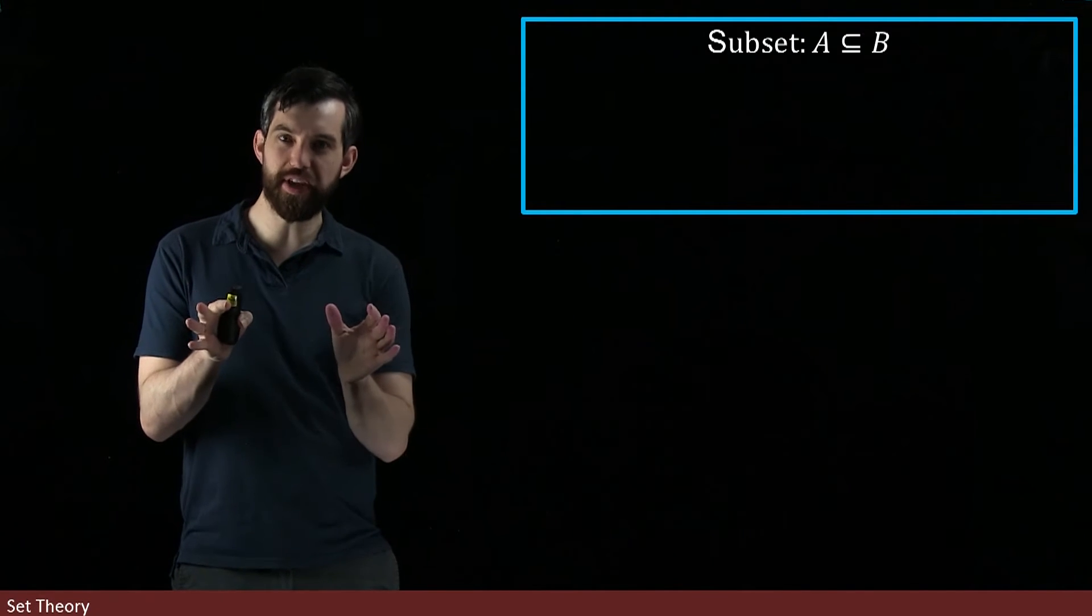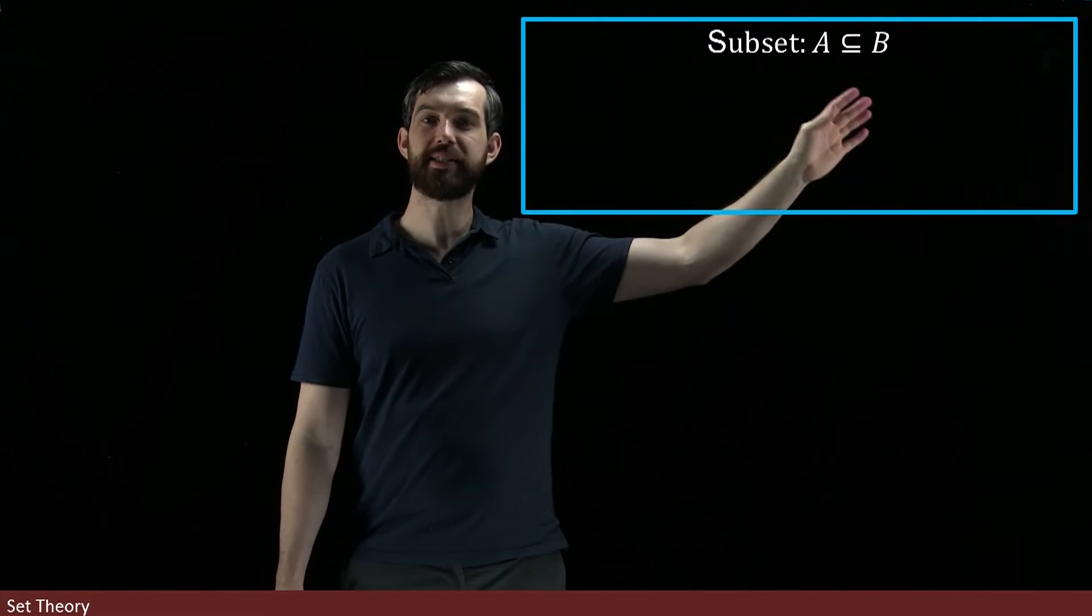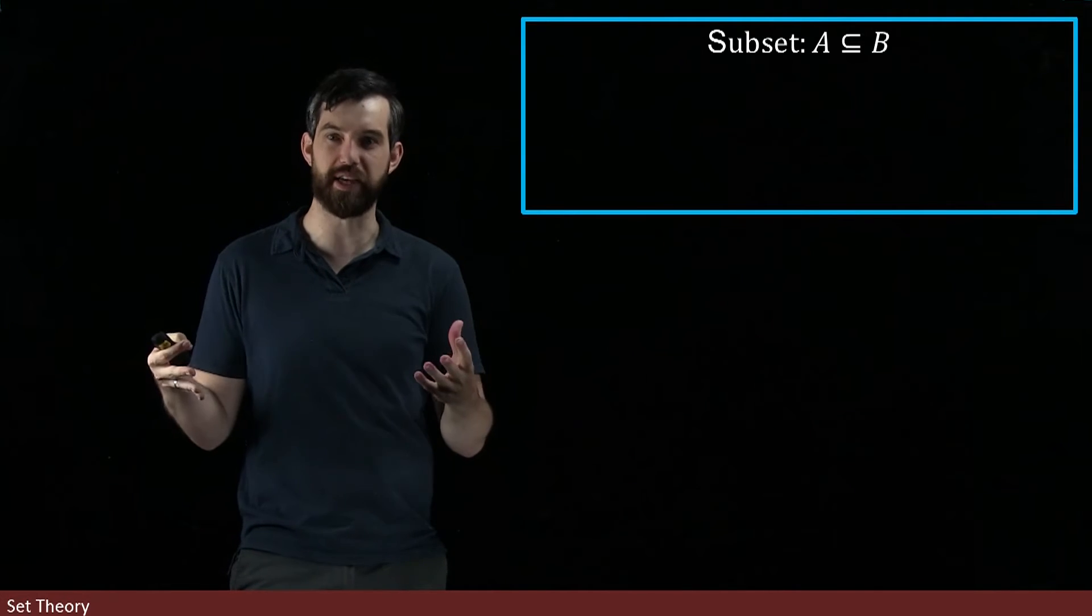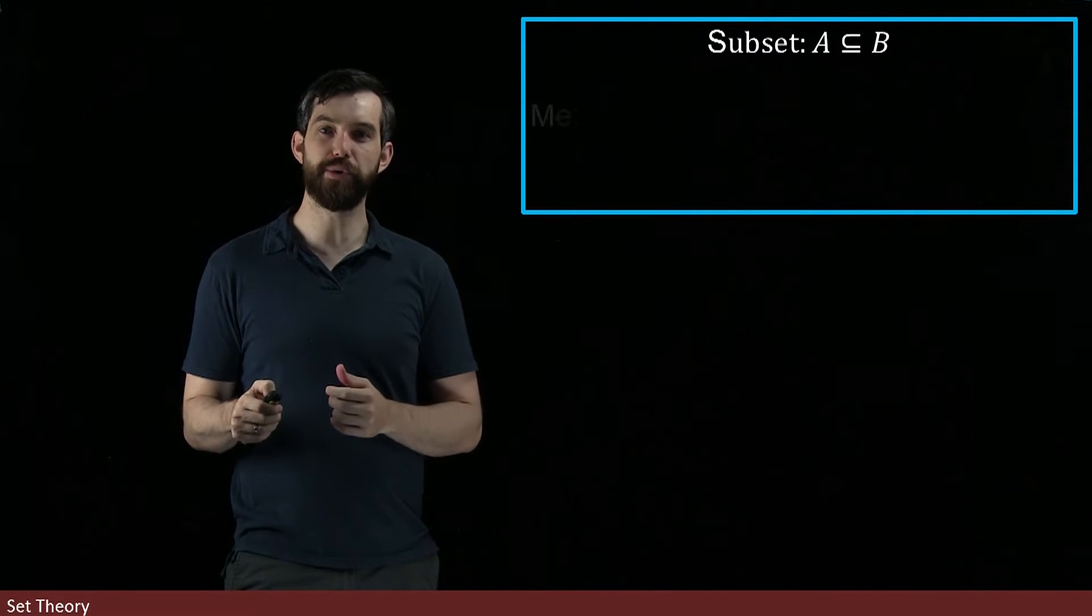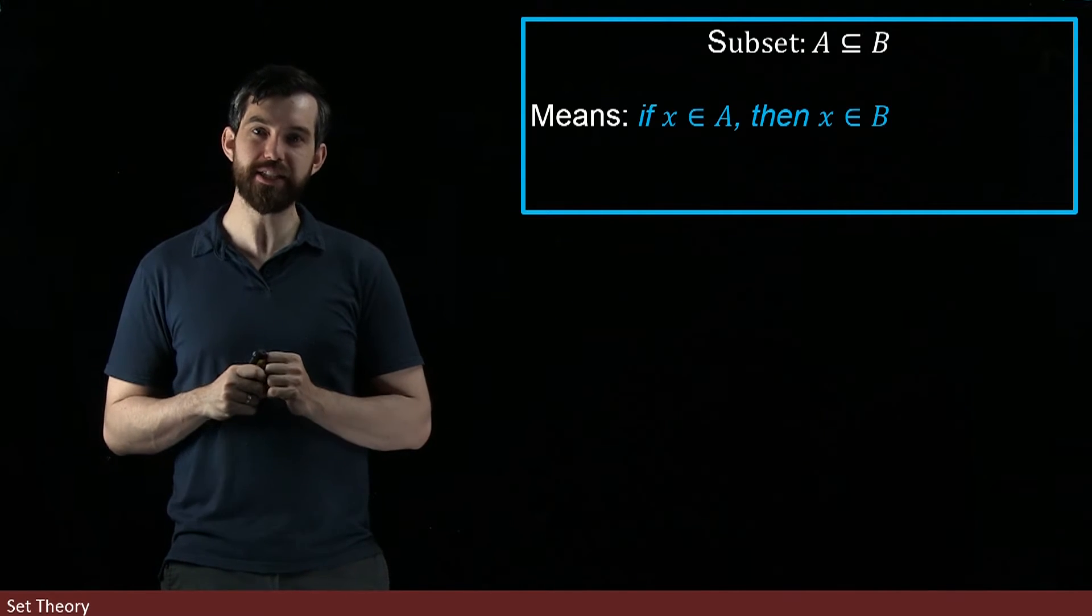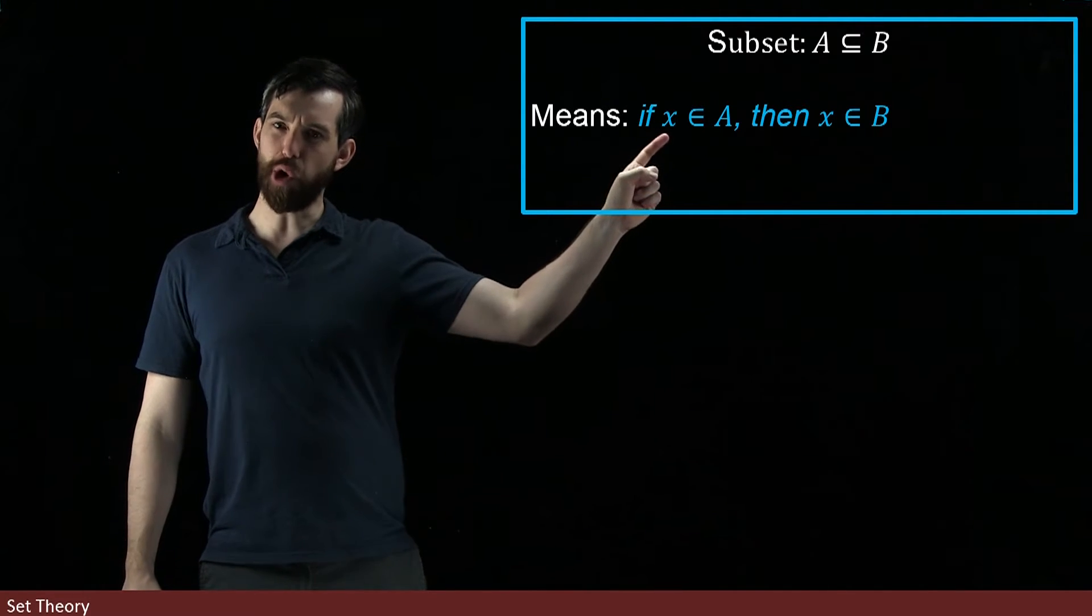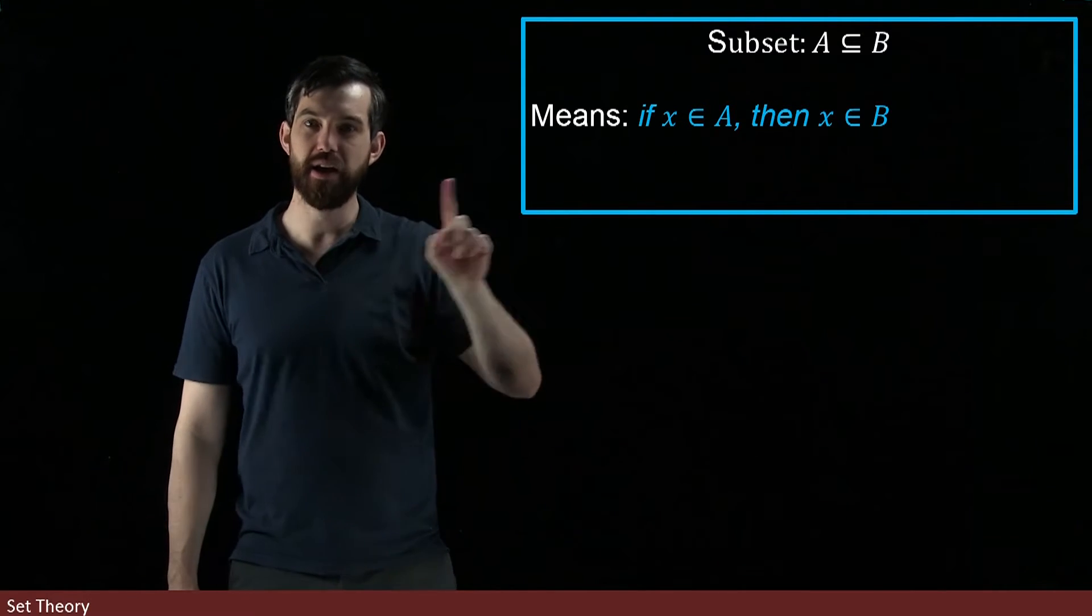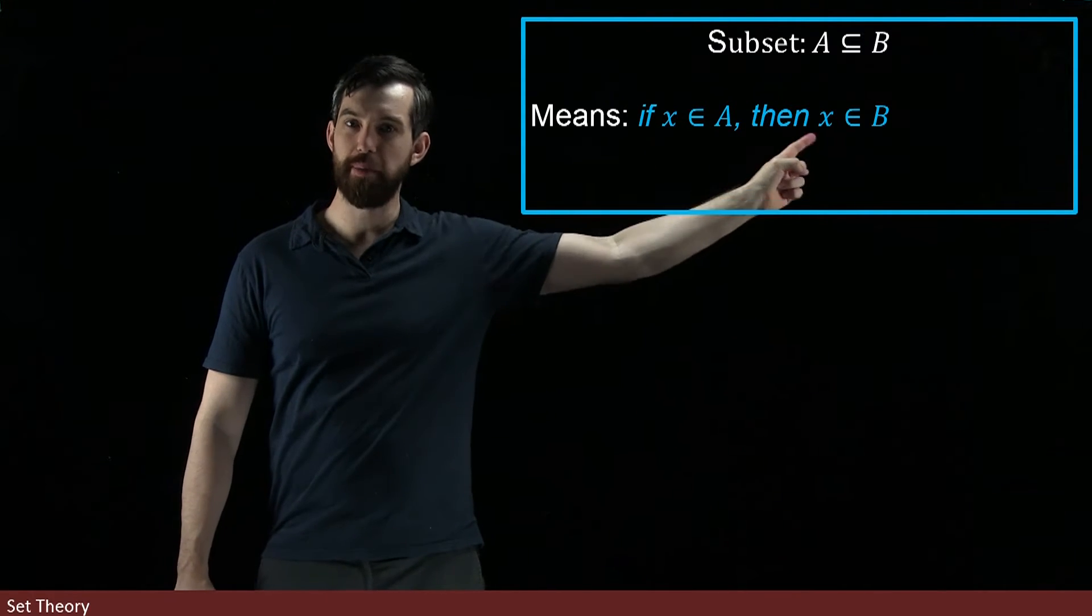We also saw the idea of a subset, and we would say that A was a subset of B. I'm going to use a little bit more formal language now because we're being equipped with it so far in our course. The formal definition of this is: if I start in A, if I choose anything that's inside of my A, then I must also be inside of my B.